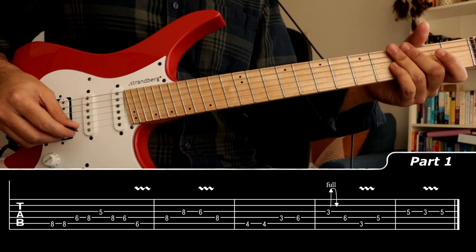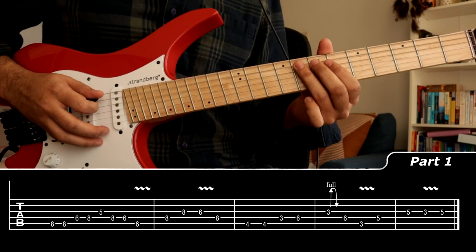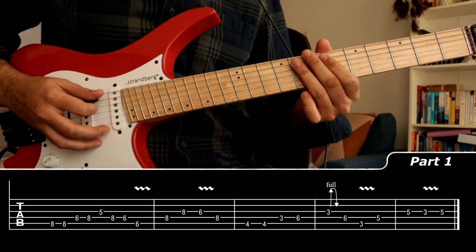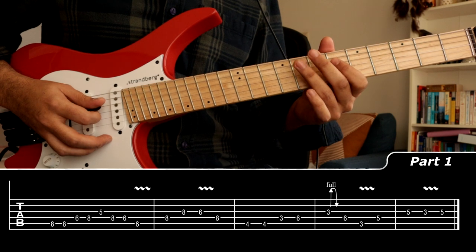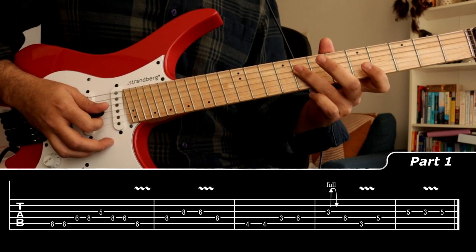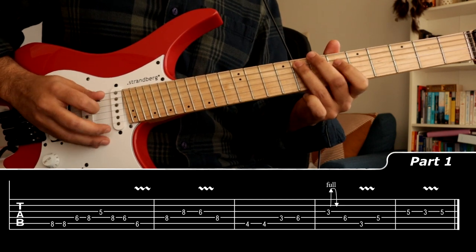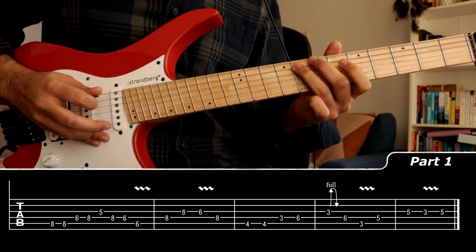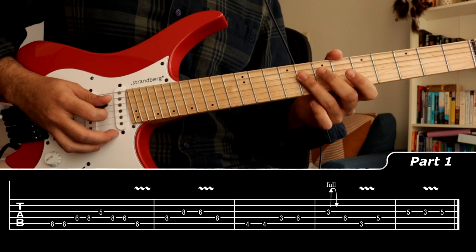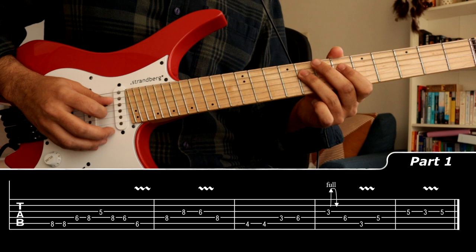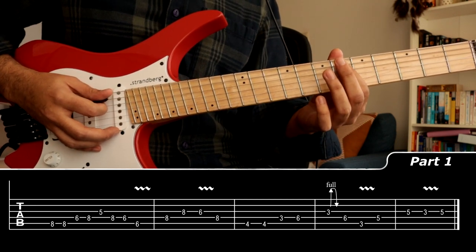So first we start off with the chorus riff. We start on the A string with our ring finger on the 8th fret, play that twice. Then we have six eight on the D string with our index finger. Shift a little lower to the fifth on the G string. Then you basically go in reverse, go back to eight six on the D string, go on to six with your index finger on the A string.